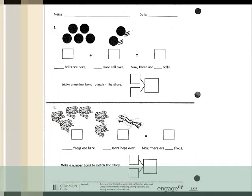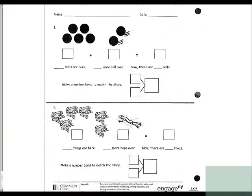We start doing it with pictures and then students start writing the numbers in. For example: five balls are here, plus two more roll over — now there are seven balls. Students then make a number bond to match the story, showing two and five make up the number seven.